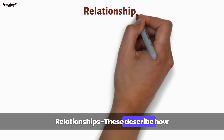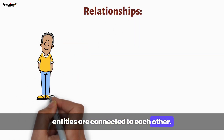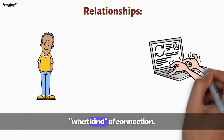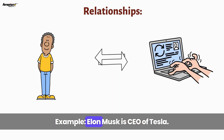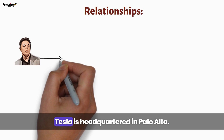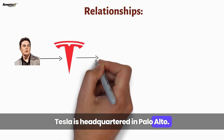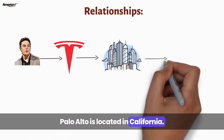Relationships — these describe how entities are connected to each other. They answer the how or what kind of connection. For example: Elon Musk is CEO of Tesla. Tesla is headquartered in Palo Alto. Palo Alto is located in California.